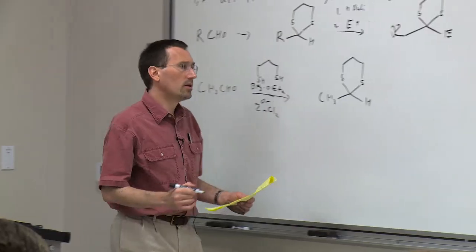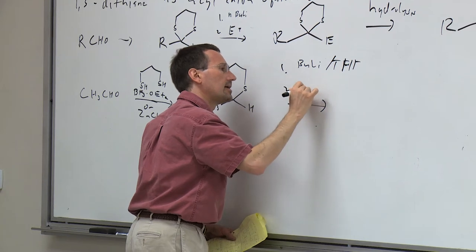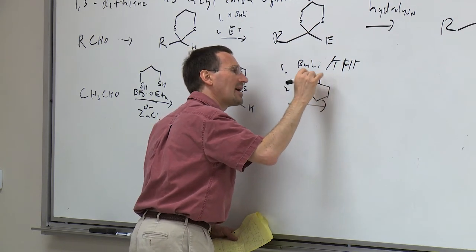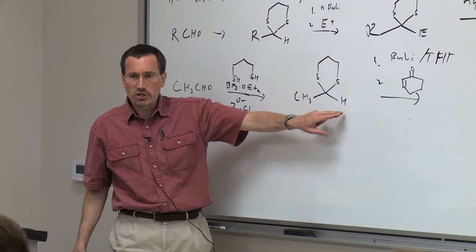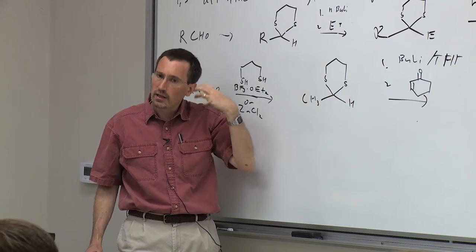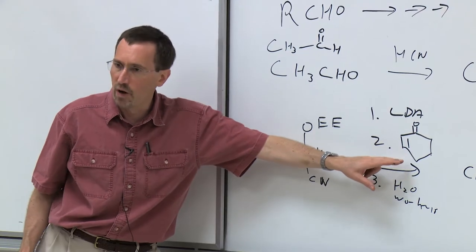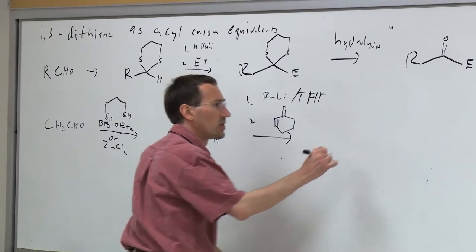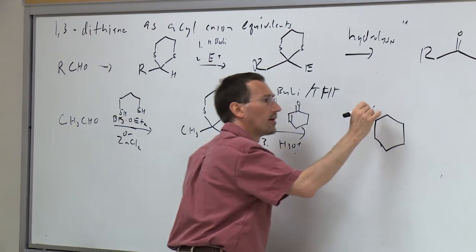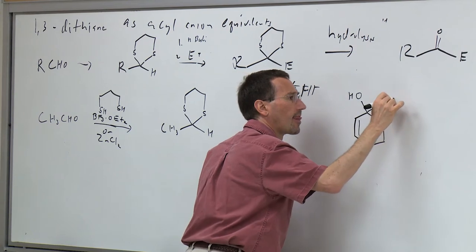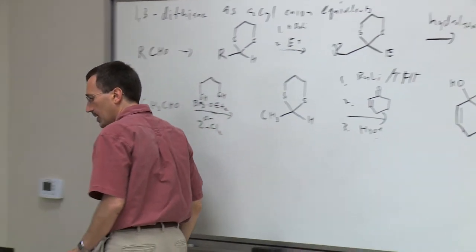For this particular example, treat with butyl lithium in THF, then add cyclohexenone. The lithium at this position is a little bit harder—more localized and less delocalized. So whereas the cyanohydrin acyl anion equivalent does a 1,4-addition, this acyl anion equivalent does a 1,2-addition. The result after aqueous workup gives the 1,2-addition product.